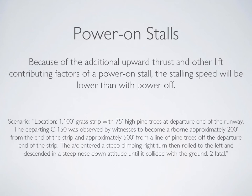Take the following example from an actual aviation incident: on a short grass strip with high pine trees at the departure end of the runway, a Cessna 150 takes off, enters a steep climbing right hand turn, then rolls to the left and descends in a steep nose down attitude until it collides with the ground. It's a pretty grim example of how a departure stall can quickly become deadly. Training for power on stalls at altitude allows pilots to recognize the signs of an onset stall and hopefully instinctively take preventative action.